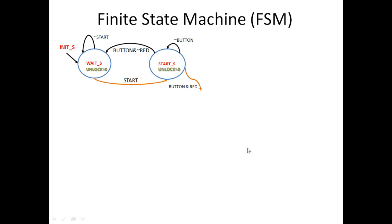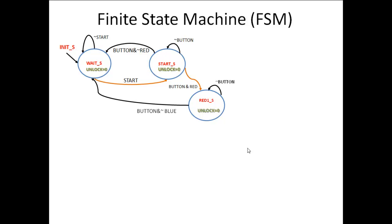If the button pressed happens to be a red button, the system enters the red one state. It remains in red one state until no button is pressed. When a button is pressed and if it's not a blue button, the system enters the wait state, because in the passcode sequence the second correct code is blue, which was not entered, so the system goes back to wait state.